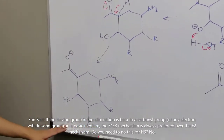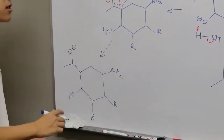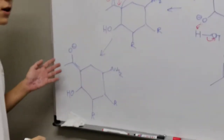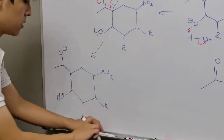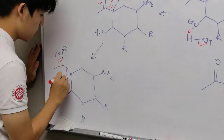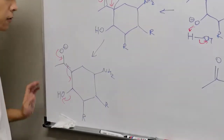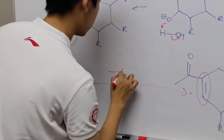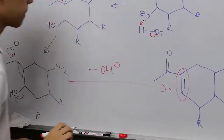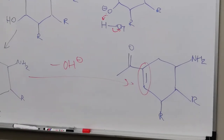This enolate functional group is actually very reactive, so it will readily kick out an OH⁻ anion to produce our final product. And this is the whole mechanism.